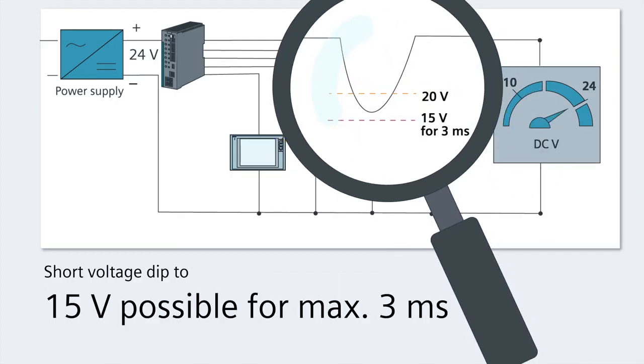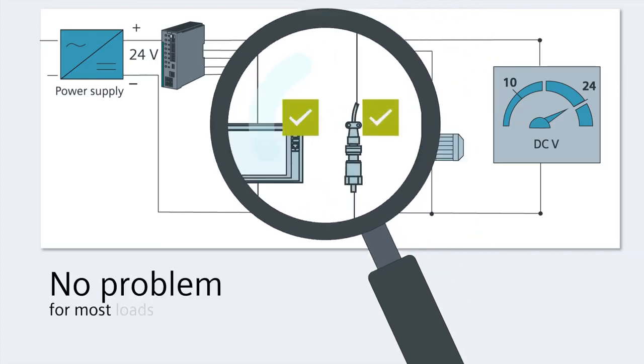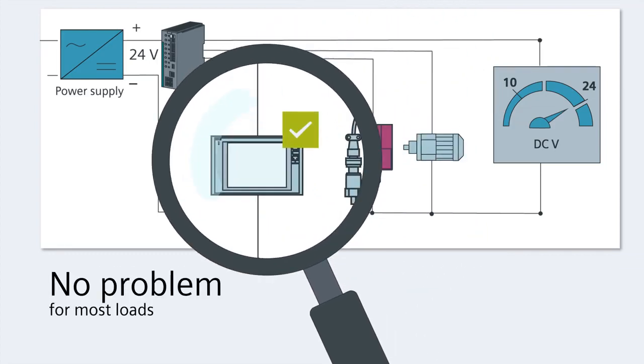The voltage can dip from 24 volts to 15 volts for a maximum of 3 milliseconds in the event of a short circuit. But this poses no problem for most loads.